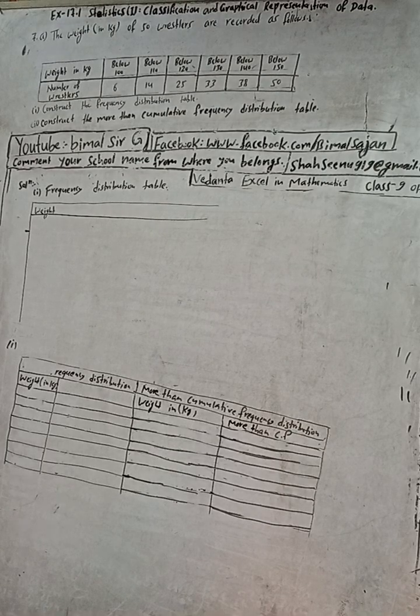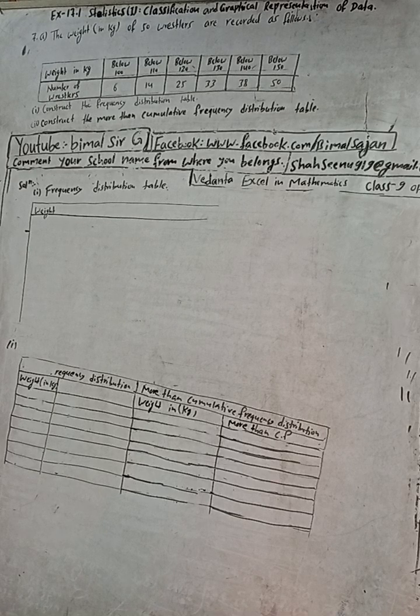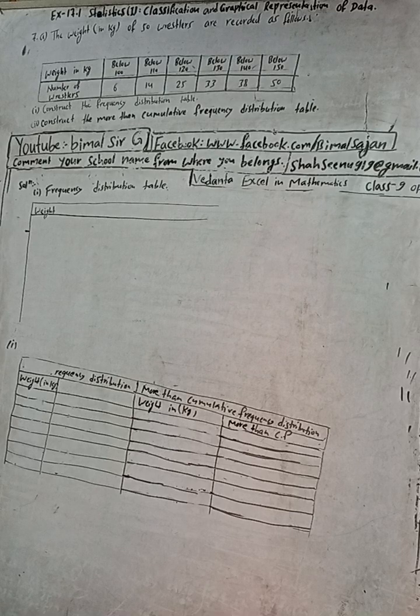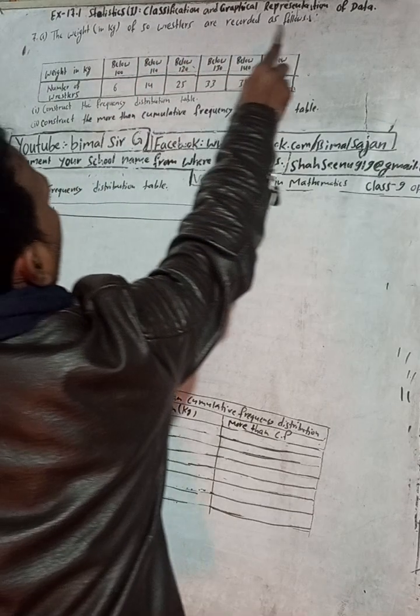Class 9 and 10 students, welcome back to Bimal Sarji YouTube channel. This is question number 7A, exercise 17.1, Statistics — first part: classification and graphical representation of data. This is from Vedant Excel in Mathematics Class 9, compulsory mathematics. The question here is 7A: the weight in kg of 50 wrestlers are recorded as follows.